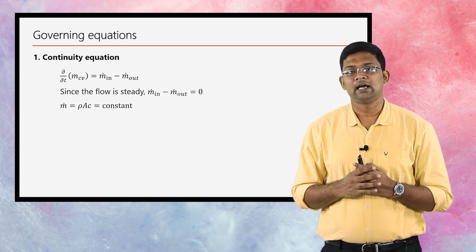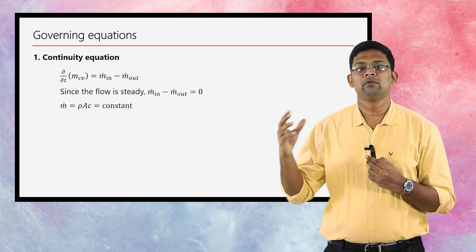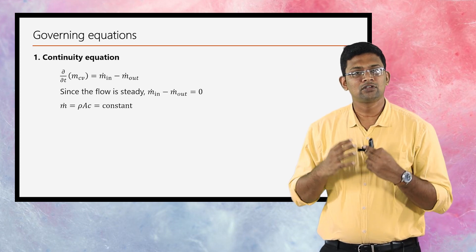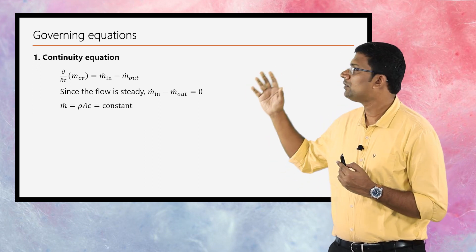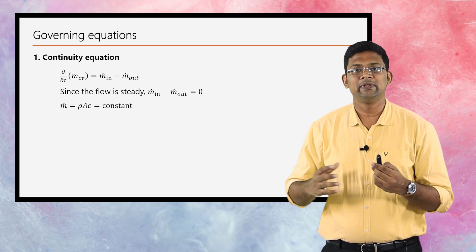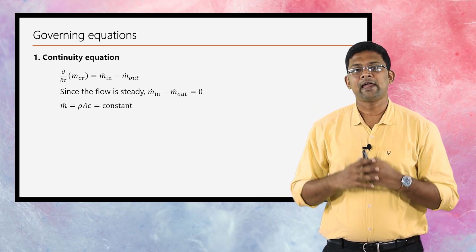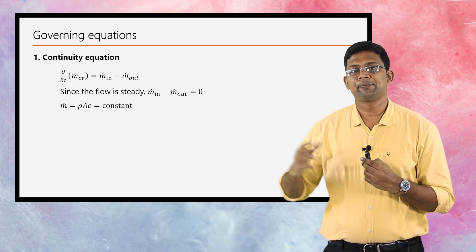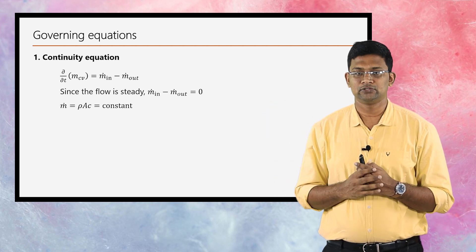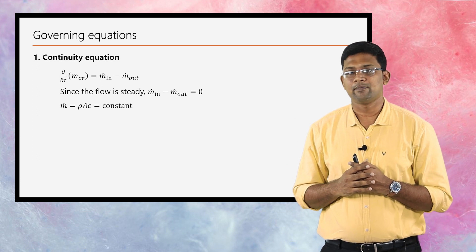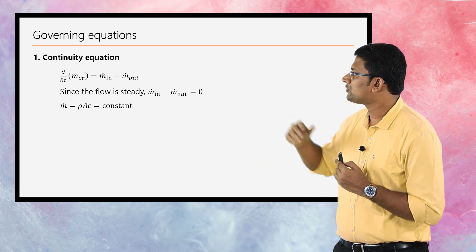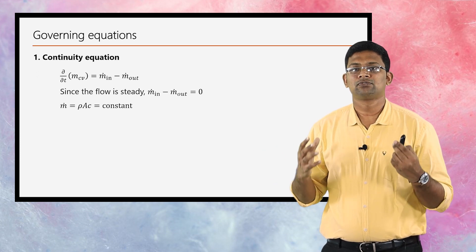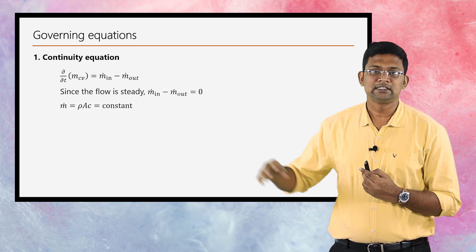Starting with the continuity equation: the rate of change of mass within the control volume equals the difference between incoming and outgoing mass flux — that is, ∂/∂t(m_cv) = ṁ_in − ṁ_out. For a steady process, the time rate of change of any property is zero, so this reduces to ṁ_in − ṁ_out = 0, or in other words, the mass flow rate ρAC is a constant. This is the first governing equation.